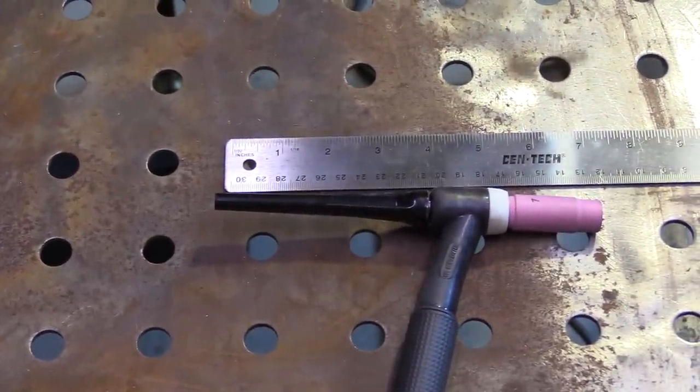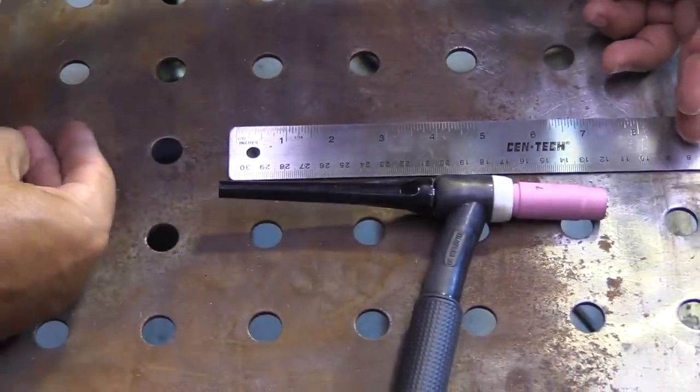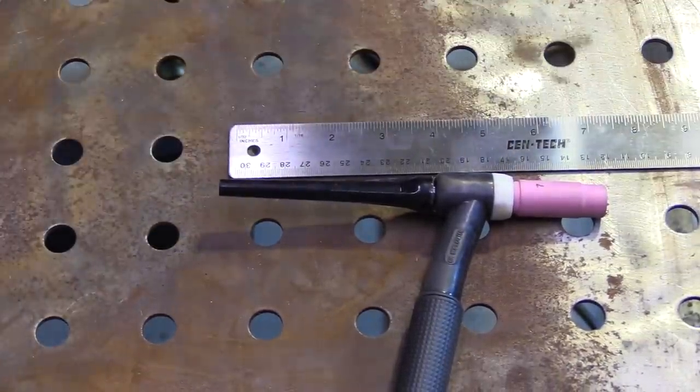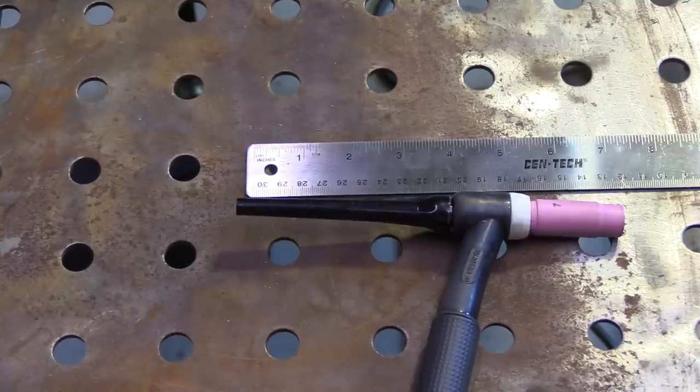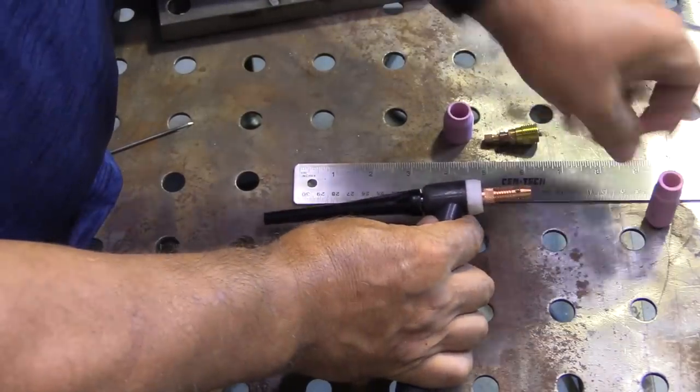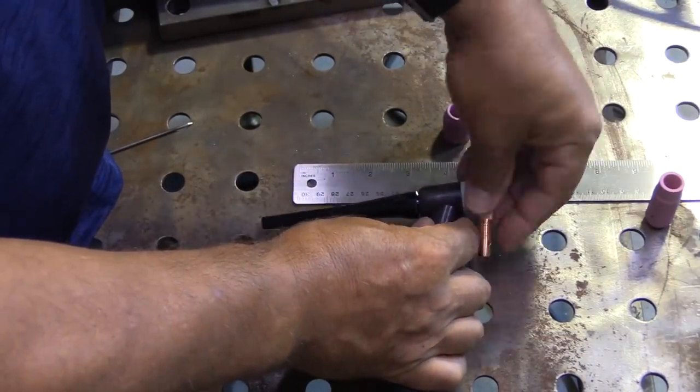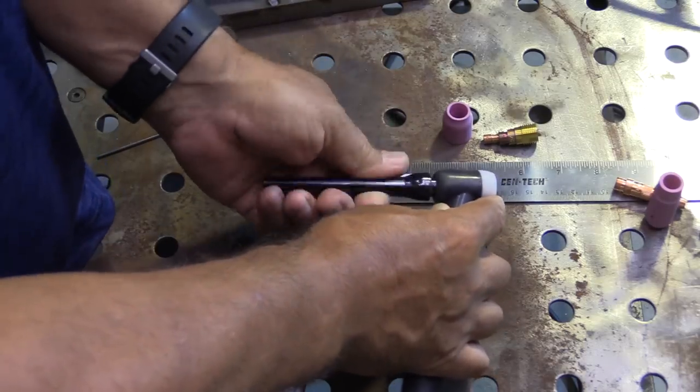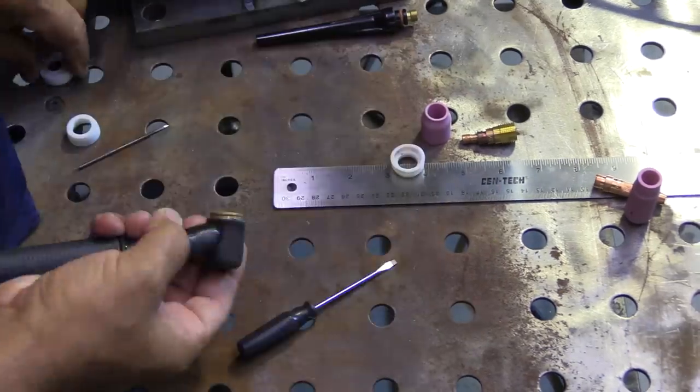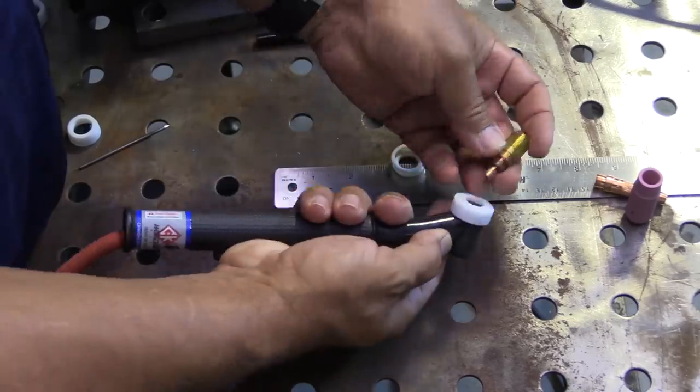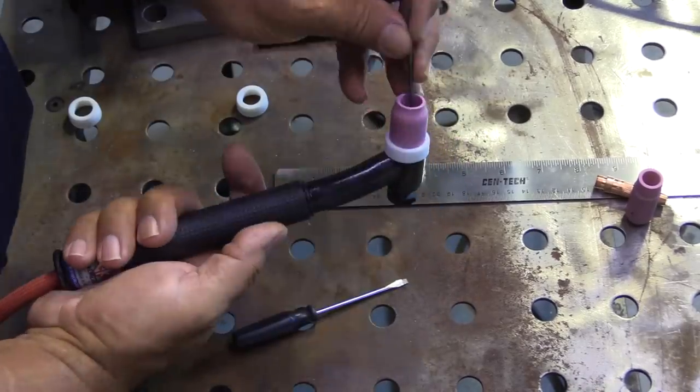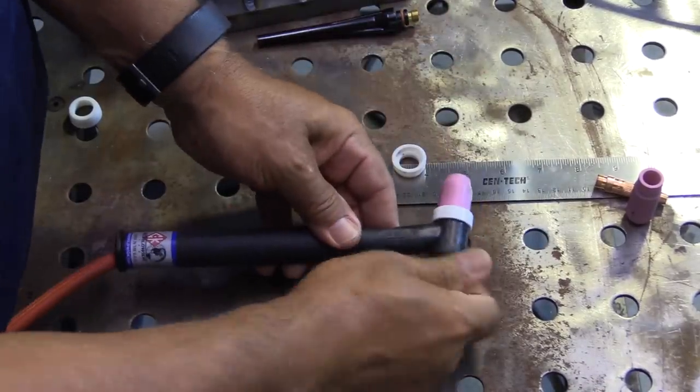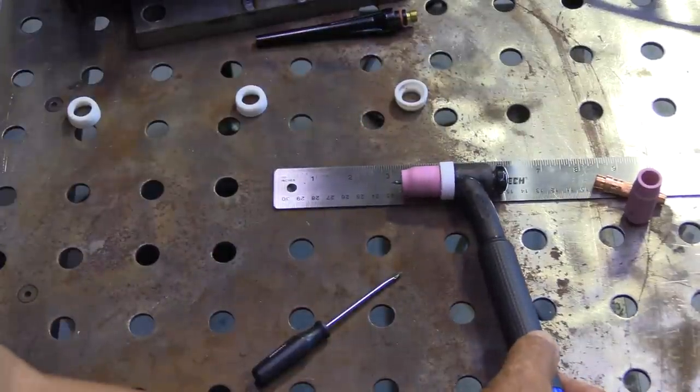This is your standard torch that comes with most 200 amp machines. Nothing wrong with them, they work fine, but not going to cut it for titanium. Not only is it kind of long with that long back cap and the long cup, but it's just not enough shielding for welding titanium unless you're just going to do a tack or something. So the first thing I'm going to do is take all this stuff off and put on stubby gas lens hardware. This is a 17 air cooled torch and the stubby kit will allow me to use these small style cups, gas lens cups.